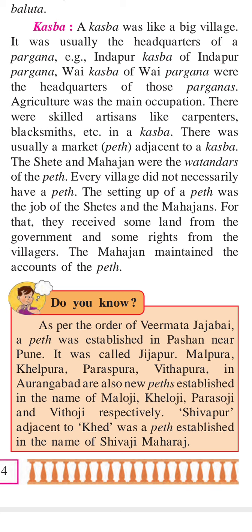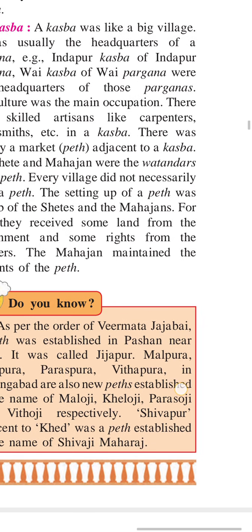There was usually a market called a 'path' adjacent to the Kasbah. The Shethi and Mahajans were the Vatandhas who controlled this market. Not every village necessarily had a path, but the setting up of the path was the job of the Shethi and Mahajans.